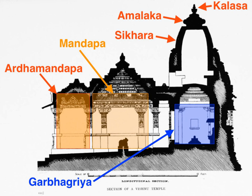The temple is a place for Tirtha — pilgrimage. All the cosmic elements that create and celebrate life in the Hindu pantheon are present in a Hindu temple, from fire to water, from images of nature to deities, from the feminine to the masculine, from Kama to Artha, from the fleeting sounds and incense smells to Purusha — the eternal nothingness yet universality — as part of Hindu temple architecture.